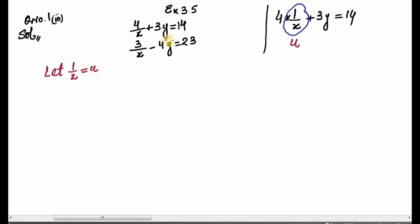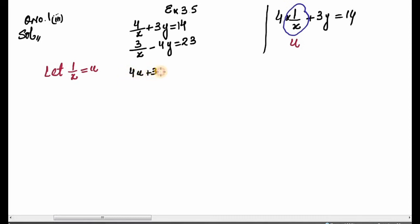Why do we substitute? Because 1/x is not a standard linear variable — it's in fraction form. By letting 1/x = u, we convert it into a standard variable. Now our transformed equations become: 4u + 3y = 14 and 3u - 4y = 23.